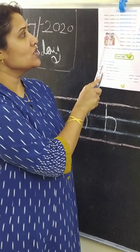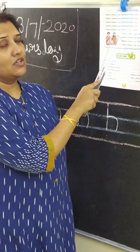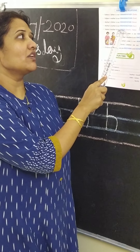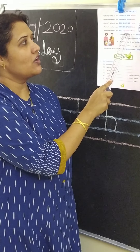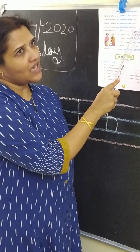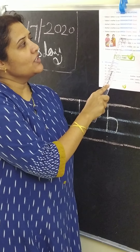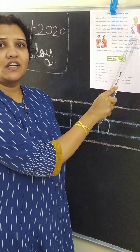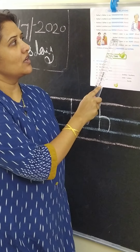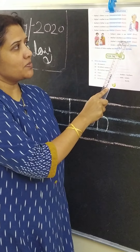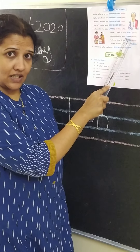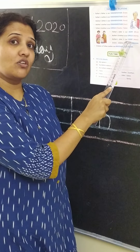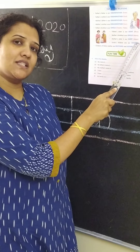Now what do you call your father's brother? Your father's brother is your uncle and you call him Chacha or Kapa. Your father's sister is your aunt and you call her Bahu. Mother's brother is your uncle and you call him Mama. Mother's sister is your aunt and you call her Masi.